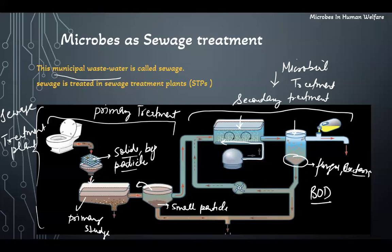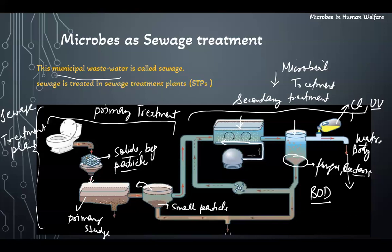Still, this water contains various harmful bacteria and fungal organisms. So before passing it to any kind of water body like lakes, they are treated with chlorine, which is an antimicrobial agent, or we can treat the water with UV radiation. Most of the microbes will be removed, and now water is free from all the effluents and microbes. It can be released into a water body or it can be used again.